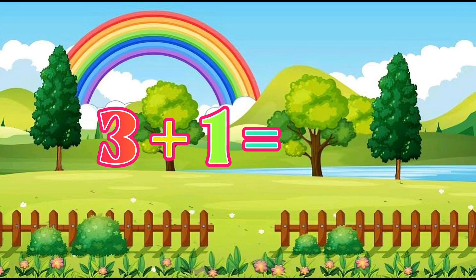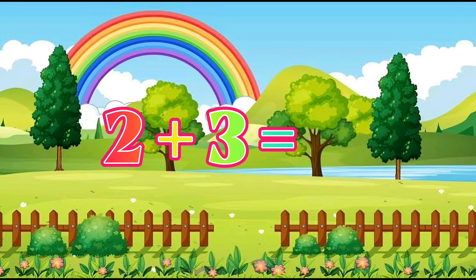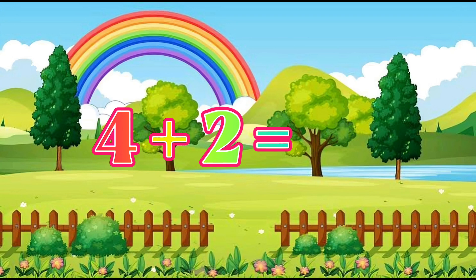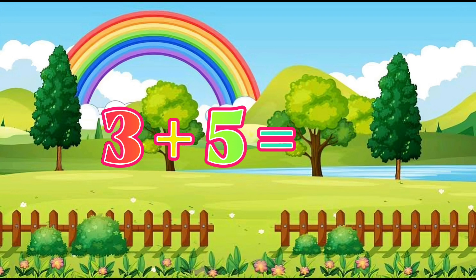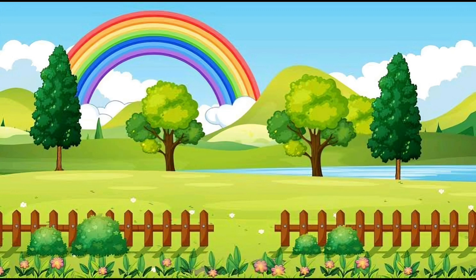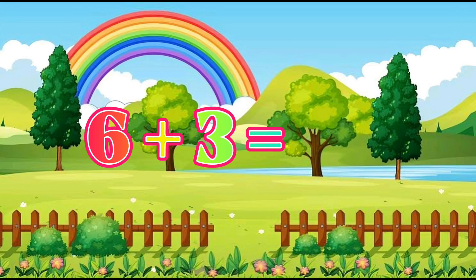Three plus one equals four. Two plus three equals five. Four plus two equals six. Three plus five equals eight. Six plus three equals nine.